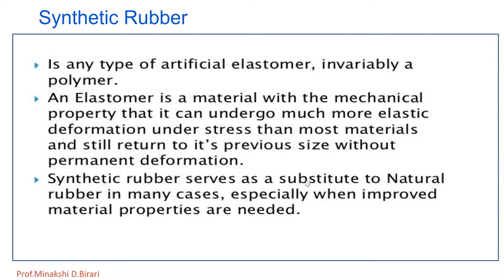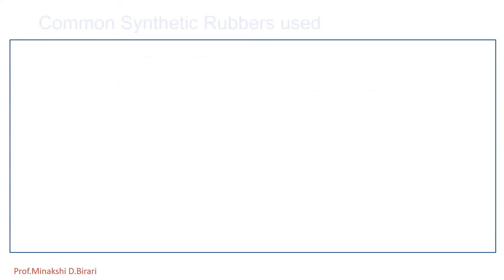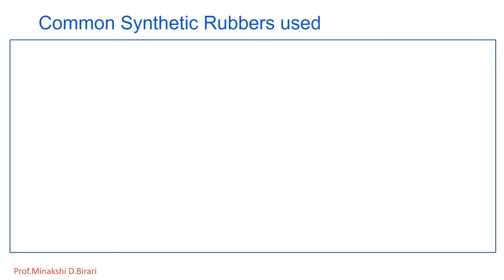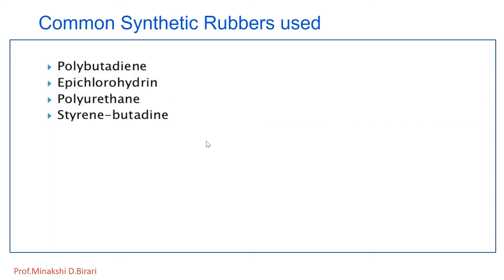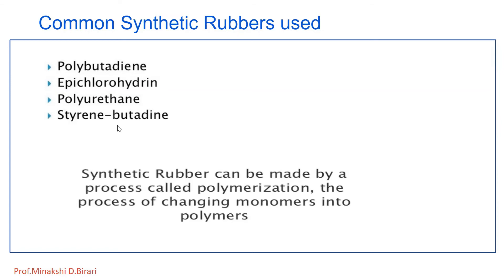Sometimes synthetic rubber serves as a substitute to natural rubber, especially when improved material properties are needed. Common synthetic rubbers include polybutadiene, epichlorohydrin, polyurethane, and styrene-butadiene. Synthetic rubber is made by a process known as polymerization — the process of changing monomers into polymers — which has already been discussed in detail in previous lectures.